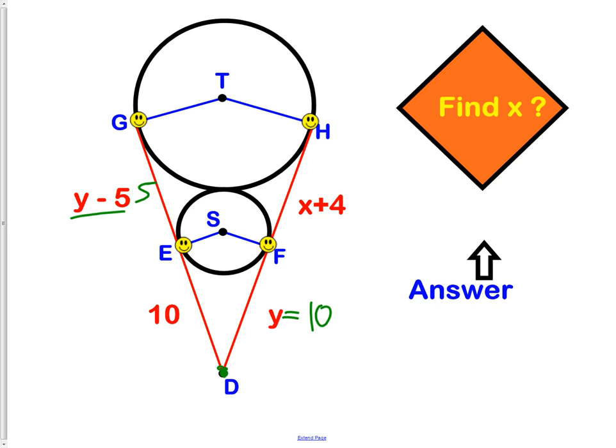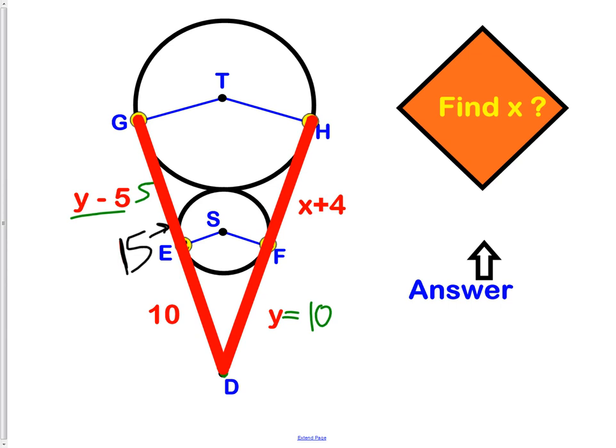Now, what we're going to do is we're going to look at this information from D all the way to G, we have a measurement of 15. I'll put that in a different color here. So, that dark red line is 15. Well, that red line is the same as that red line. They both have to be 15.